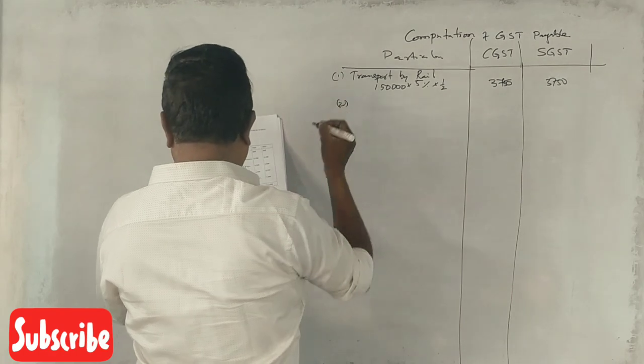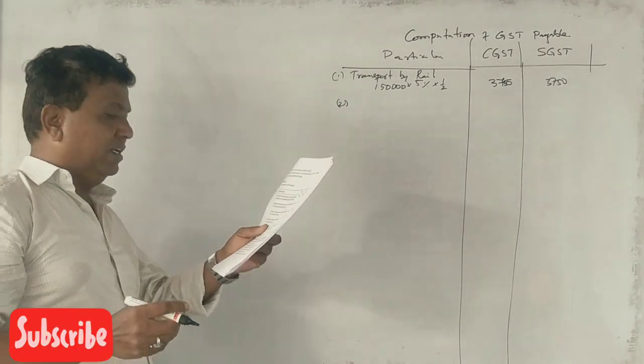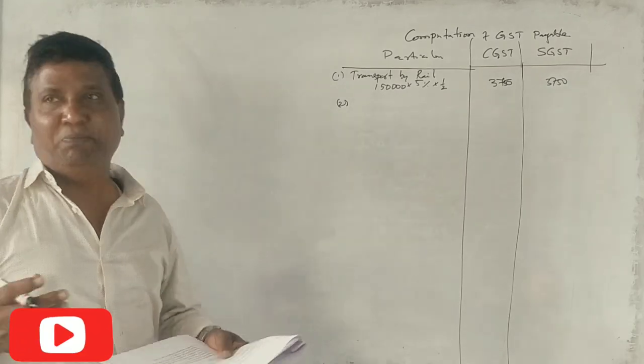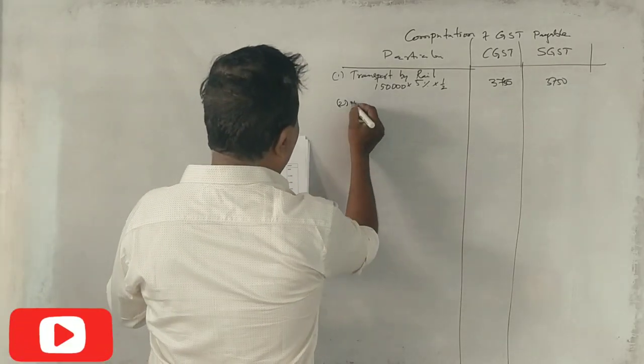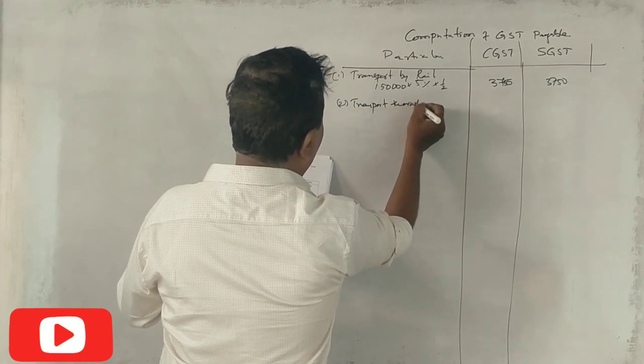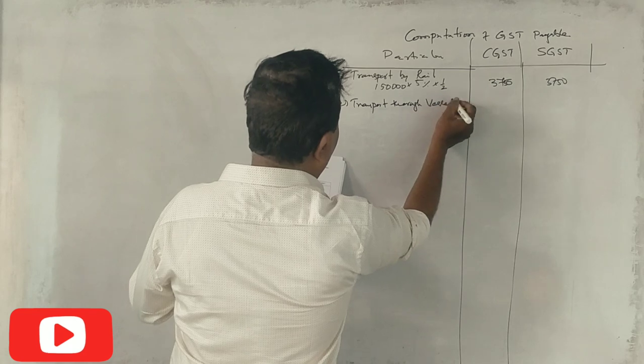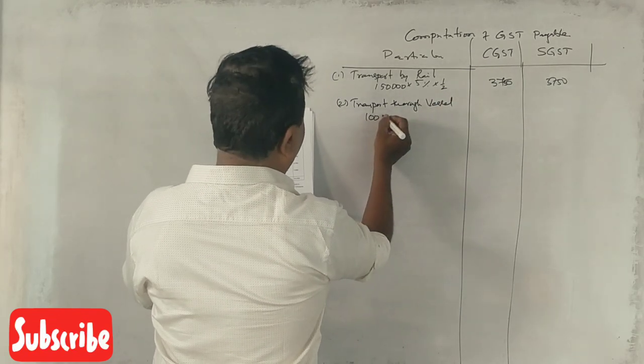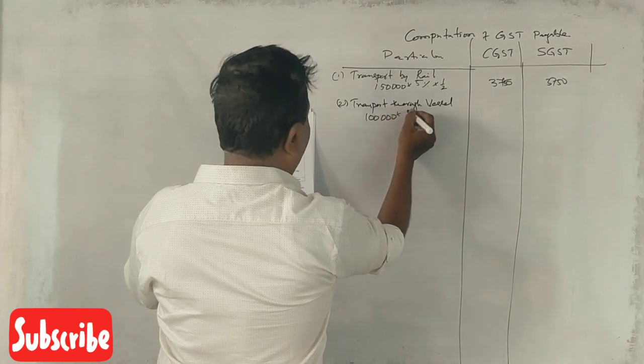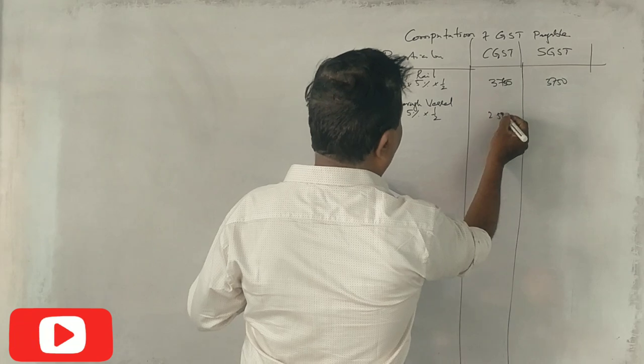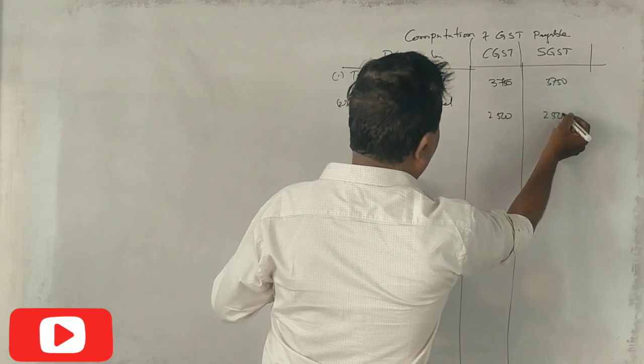The transport of goods in a vessel. The vessel is a ship, so transport through vessel at 5%, 1 by 2, equals 2,500 and 2,500.